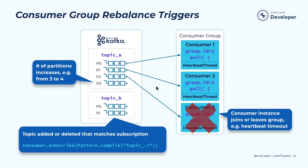Sometimes a rebalance will be needed among the consumer instances within the same group. This can happen because one of the instances fails the heartbeat with the group coordinator, indicating the consumer instance has failed; or a new consumer instance has joined the group; or a new partition has been added to the subscribed topic. And if you are using wildcard subscription, some new topics being created could match your subscription. All those can trigger a rebalance.